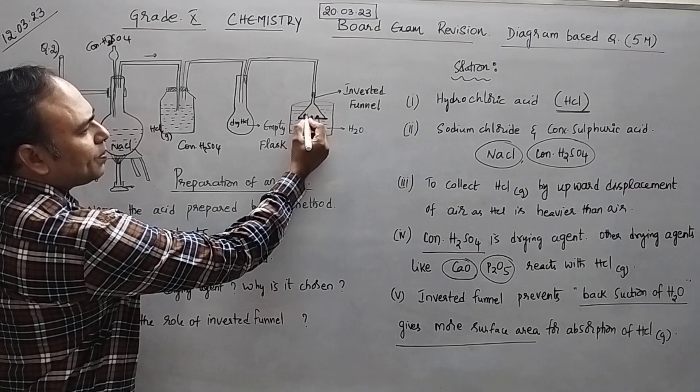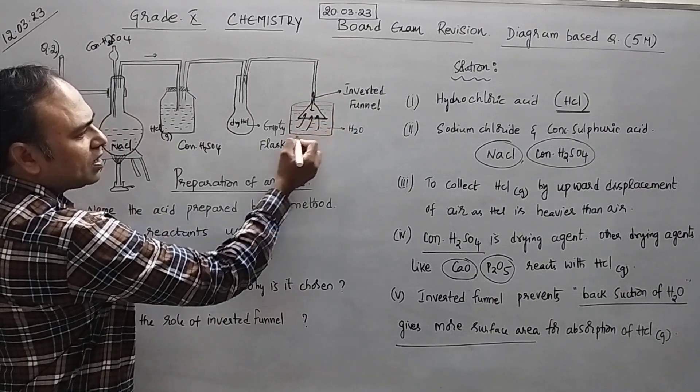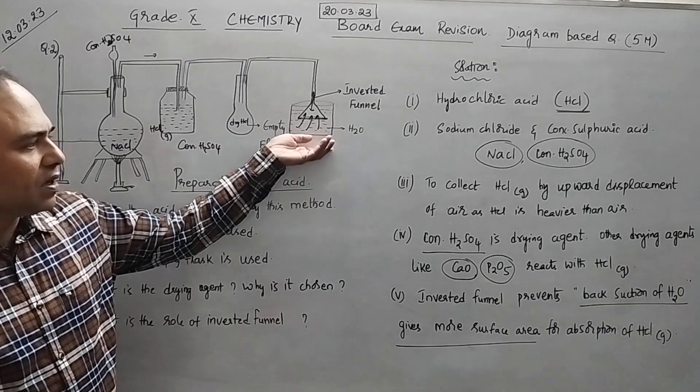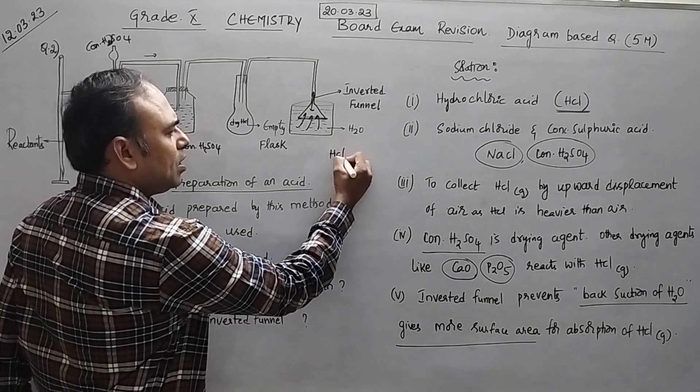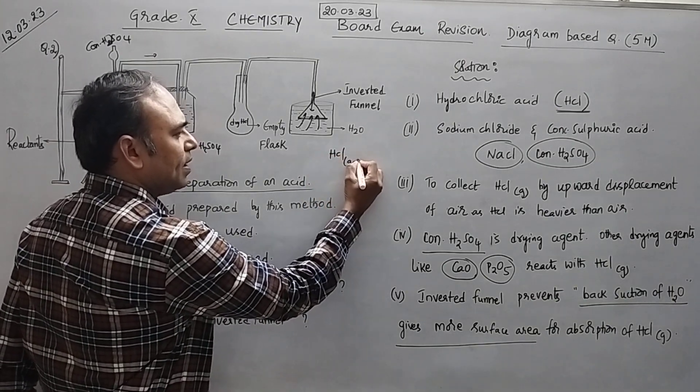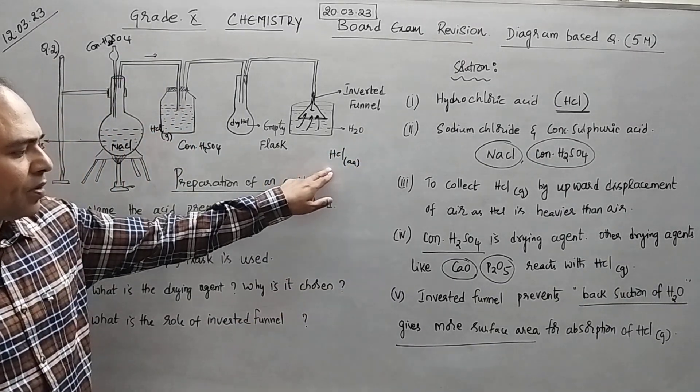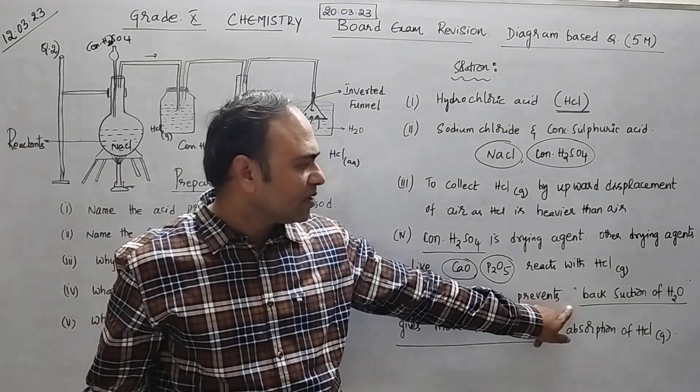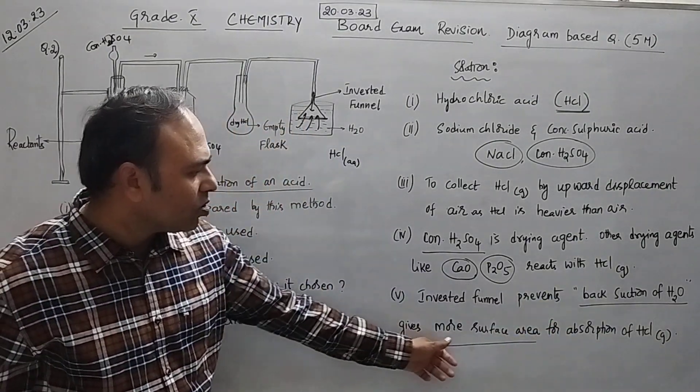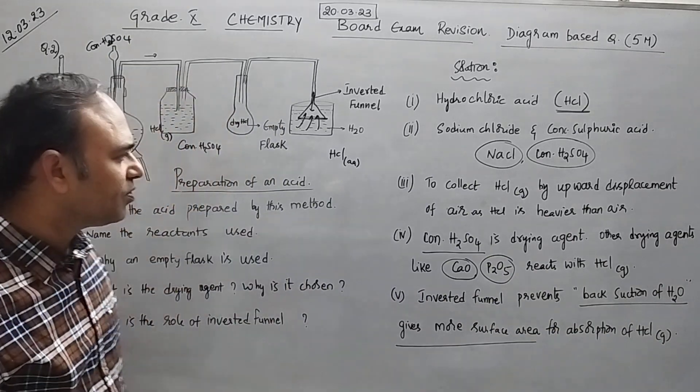What will happen? HCl gas will pass through this and it can be soluble in water and finally what you get? You will get aqueous HCl, so hydrochloric acid. So inverted funnel prevents back suction of water and gives more surface area for the absorption of HCl gas. For this reason you are using inverted funnel.